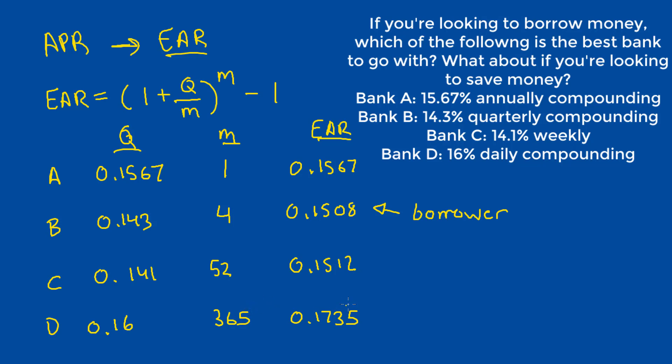But the saver's objective is to get as much interest payment on their bank deposit as possible. So they would look for the highest interest rate offered, and that is offered by Bank D, and that's the best bank for the saver to go with.